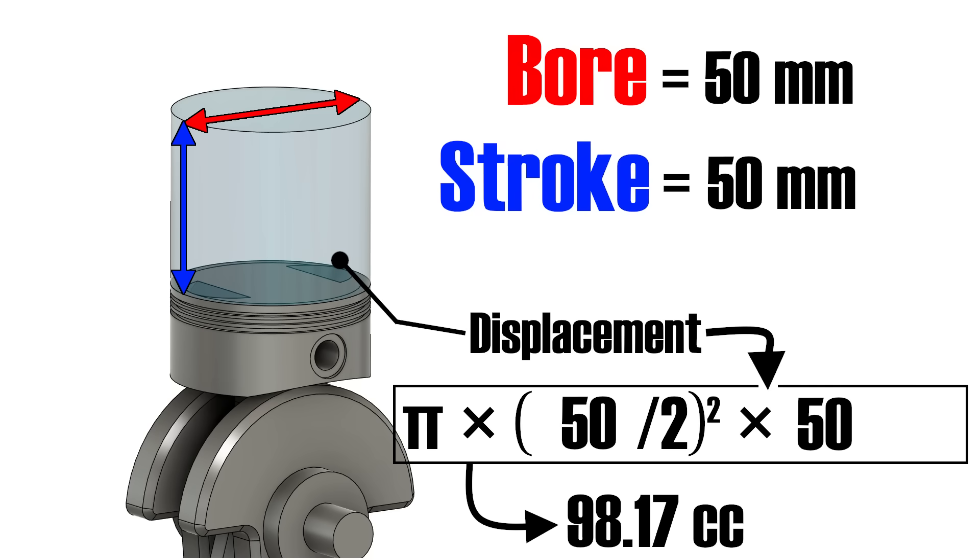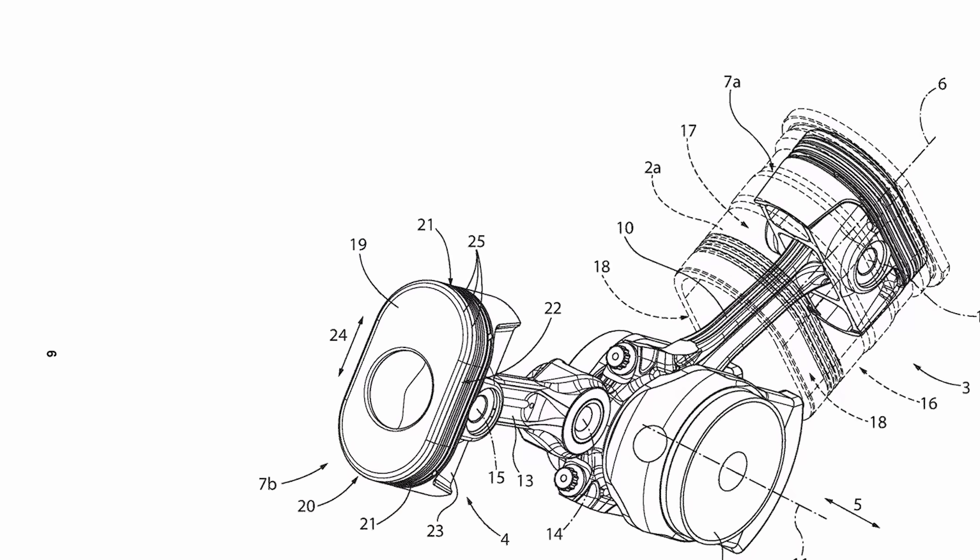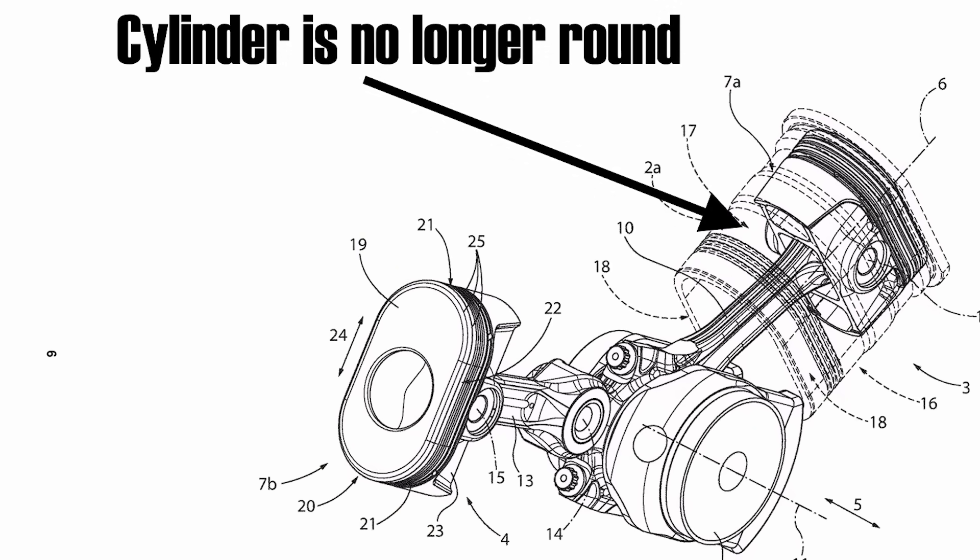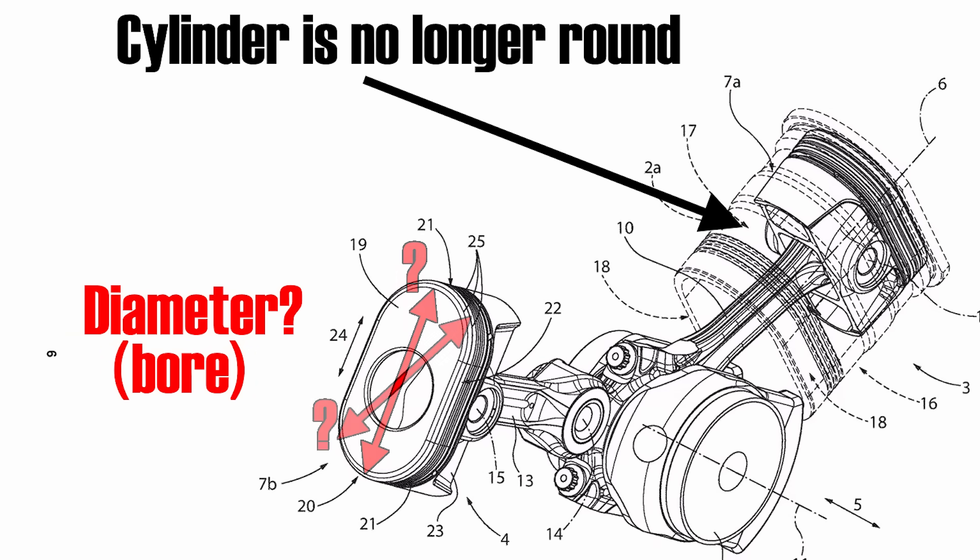In that case, the displacement of our imaginary single cylinder engine is calculated using this formula and results in 98.17 cubic centimeters. Now, let's observe an engine with an oval piston. Obviously, we no longer have a simple cylinder defined by the diameter of the piston, because the piston no longer really has a diameter.